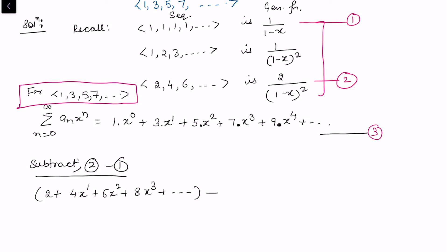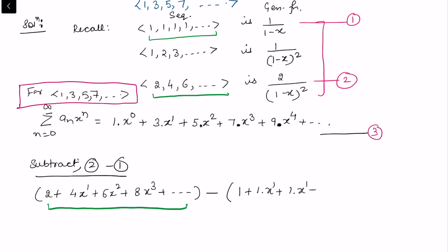Now subtract sequence 1 (all 1s): each term of sequence 1 contributes 1. So the constant term becomes 2 - 1 = 1, the next term becomes 4 - 1 = 3 times x.